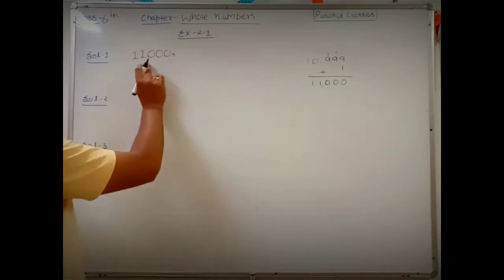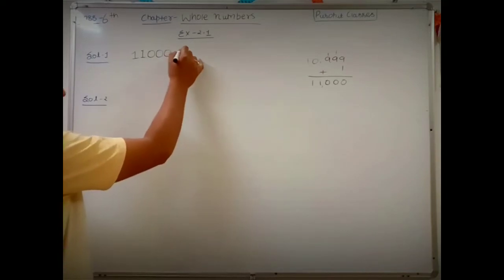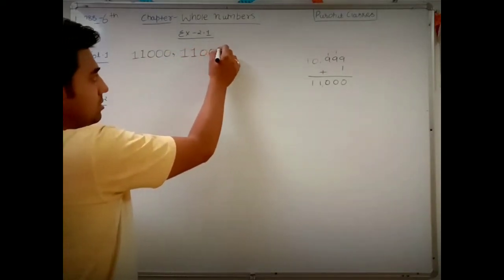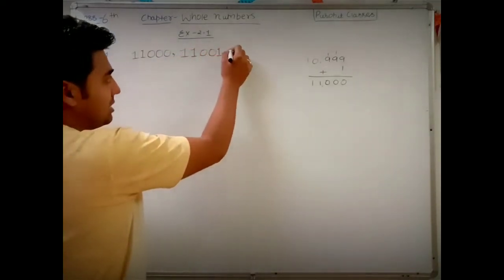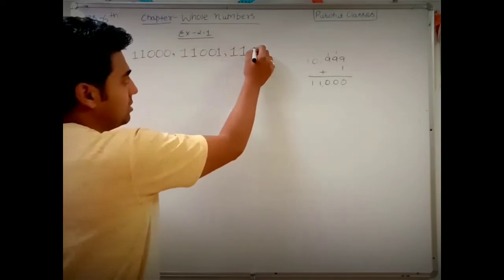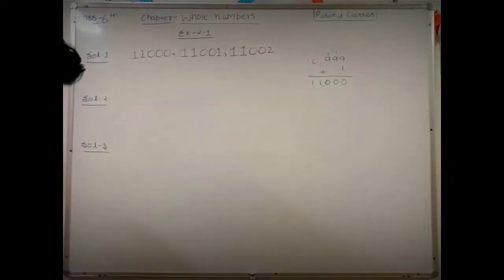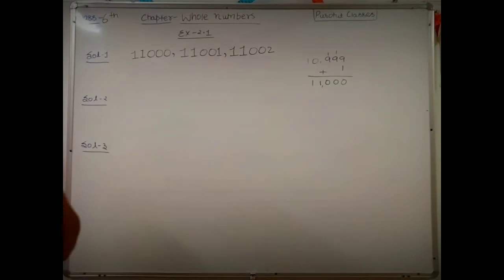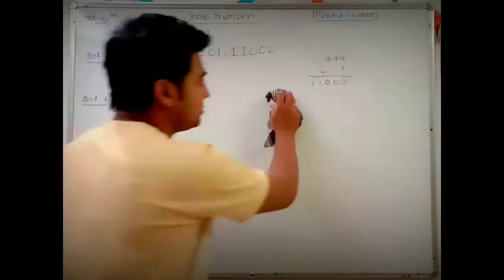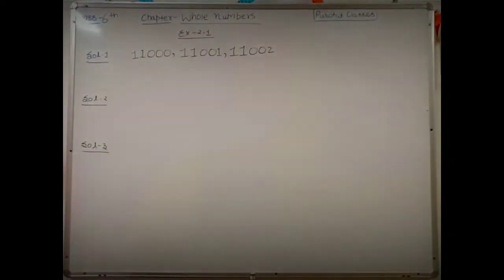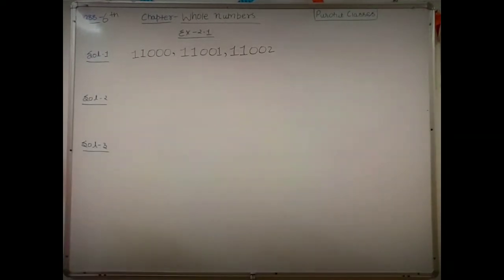Adding 1 again to 11000 gives 11001, and one more gives 11002. So the three next natural numbers after 10999 are 11000, 11001, and 11002.